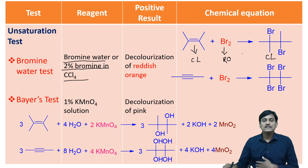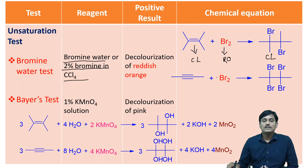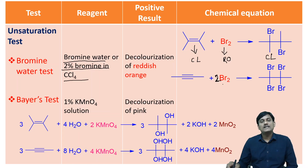So finally, the reddish orange color will be decolorized when you treat alkene with Bromine. Similarly, when you treat alkyne with Bromine, there is a formation of tetrabromoalkane. In this case also, there is a decolorization of the Bromine solution.